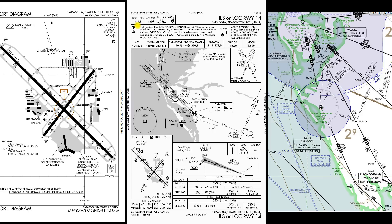We have our localizer frequency of 111.3, and that's paired with a glide slope frequency that we don't have to worry about. There's a separate frequency for the glide slope, but it's tied to that — our radio and our airplane takes care of it for us if we are doing an ILS approach. Final approach course inbound is 139 degrees. Runway landing distance available is 7,540 feet. Touchdown zone elevation: 23 feet.